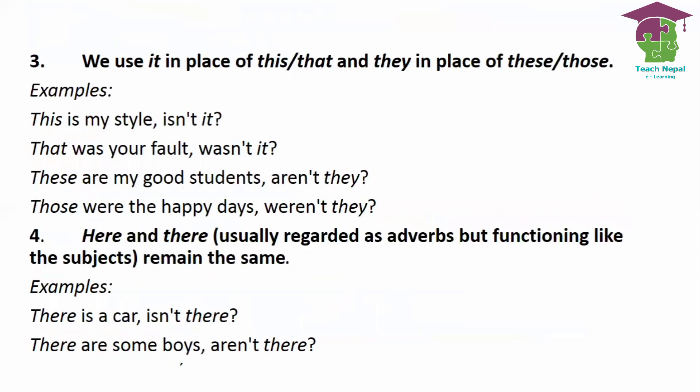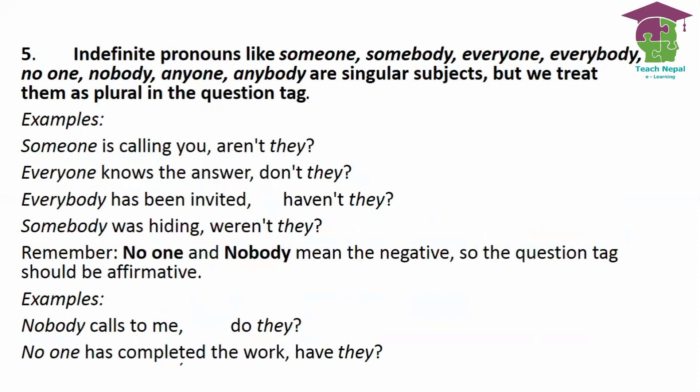We use 'it' in place of 'this' and 'that', and 'they' in place of 'these' and 'those' in the tag question. For example: 'This is my star, isn't it?', 'That was your fault, wasn't it?', 'These are my good students, aren't they?', 'Those were the happy days, weren't they?' Also, 'here' and 'there' function like subjects, so they remain the same: 'There is a car, isn't there?', 'There are some boys, aren't there?'